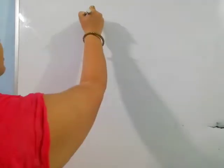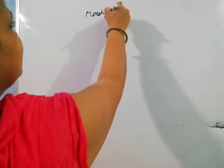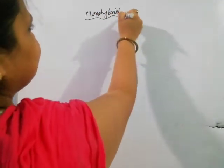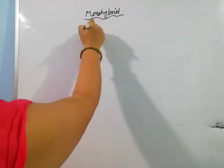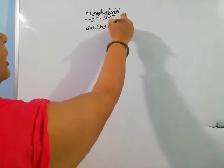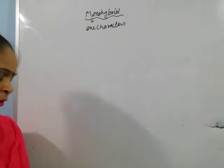Good morning students. Today we will discuss about the monohybrid cross. As you all know, in the previous lecture we discussed about the work of Mendel and the pea plant. Today we will discuss their work, what type of crosses they performed, and what type of laws they originated from these crosses. First of all, you should know what is the meaning of monohybrid — mono means they have taken only one character. This is why we call it a monohybrid cross.